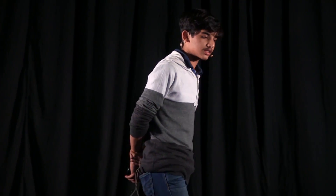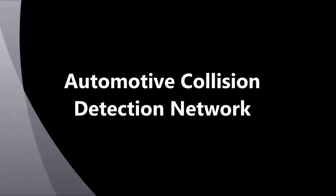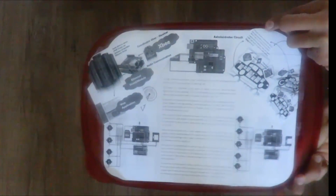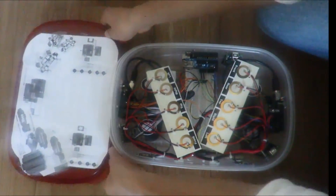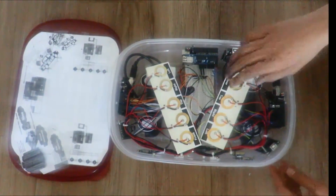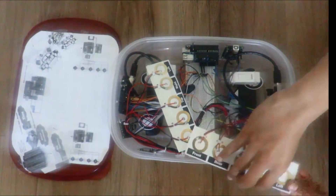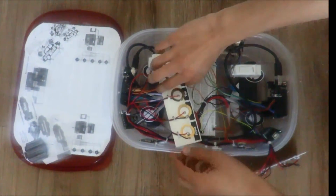Let's view how this software and hardware application works. This is the prototype I've developed — the hardware prototype. You can see there are five piezoelectric sensors in each car: one for the top, front, rear, right, and left. This is one car — let's assume it has a vehicle identification number of XXX — and this is another car with a vehicle identification number of YYY.